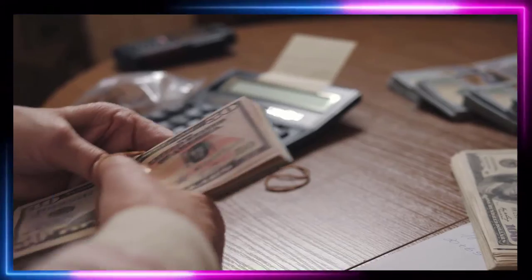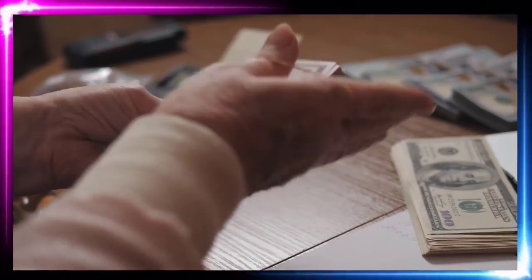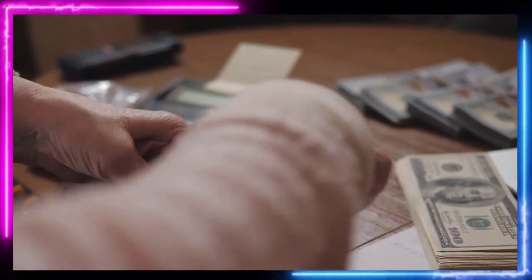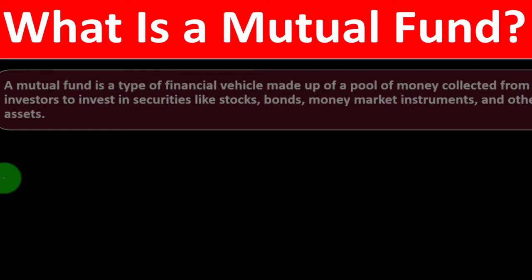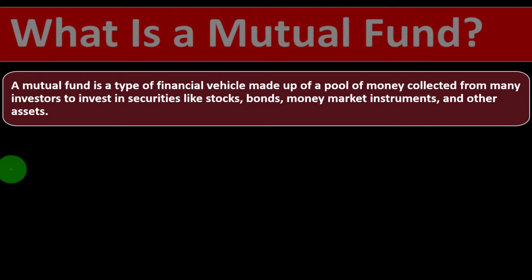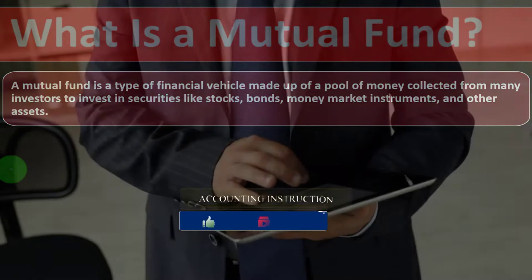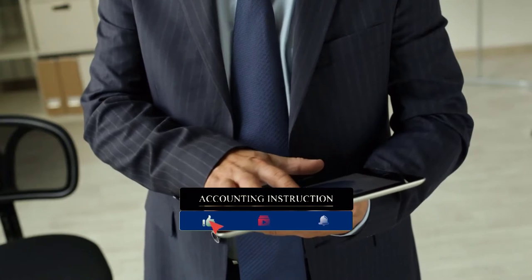In prior presentations we've been taking a look at investment goals and investment strategies. We talked about what stocks were, and now we're thinking about the question: What is a mutual fund? A mutual fund is a type of financial vehicle made up of a pool of money collected from many investors to invest in securities like stocks, bonds, money market instruments, and other assets.